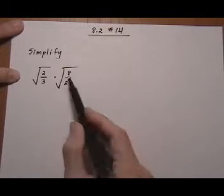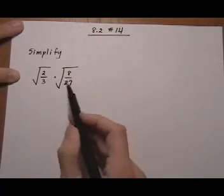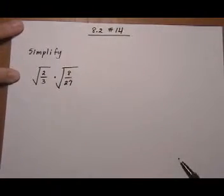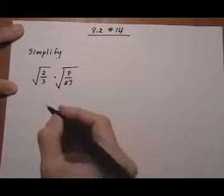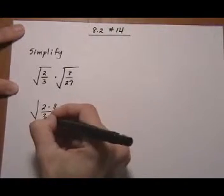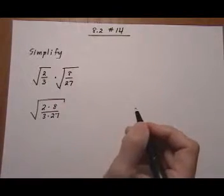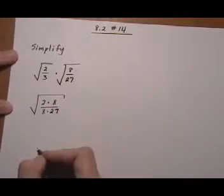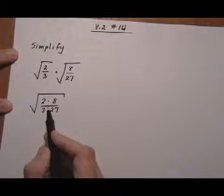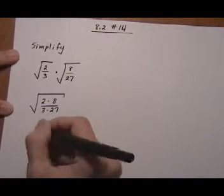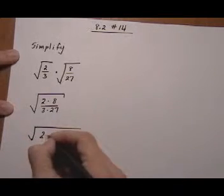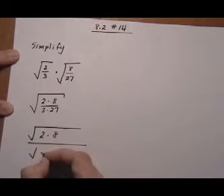Simplify root 2 over 3 times root 8 over 27. Well, this would be kind of a mess to try to simplify just the 27 or just the 8. So let's go ahead and just combine everything and see what we've got going here. So let's do root 2 times 8 over 3 times 27. And I don't see any nice canceling that happens. So if there was some nice canceling, I would leave them under one root. But I don't see anything nice happening. So let's go ahead and split them up. So root 2 times 8 over root 3 times 27.